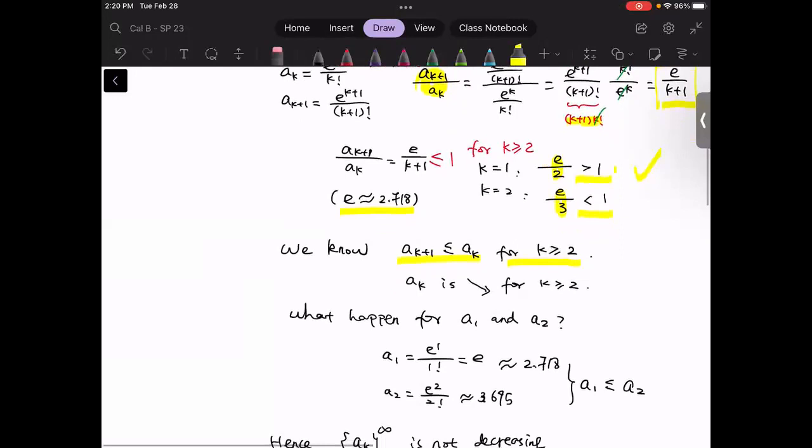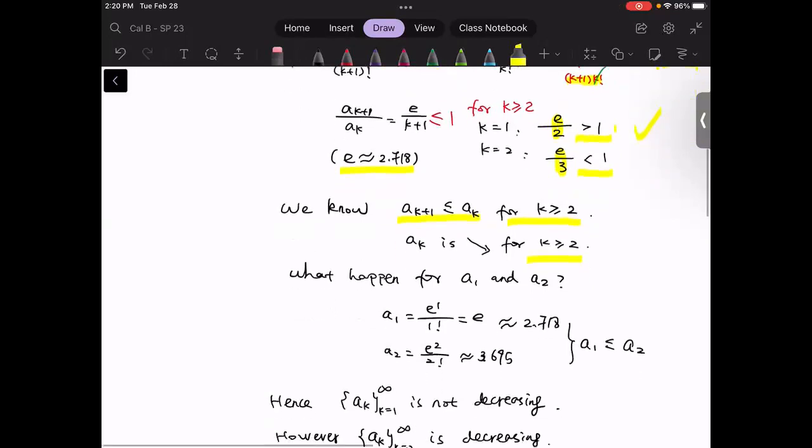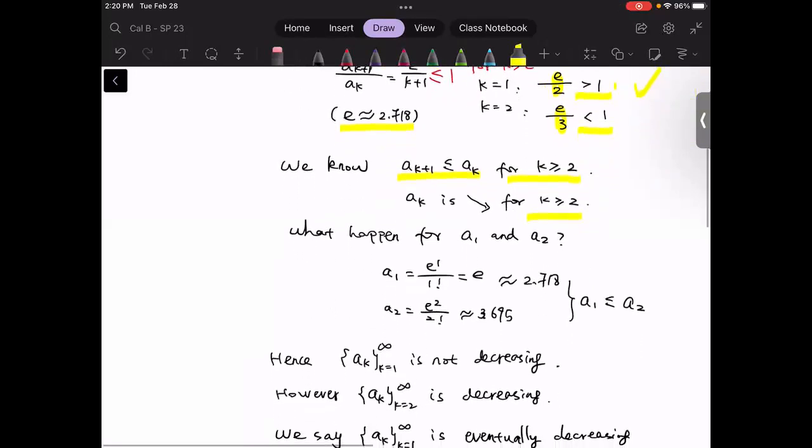Now, this tells us that the sequence is actually decreasing, but this decreasing is only true for k greater or equal to two. Now, we would like to investigate what will happen between the two numbers, a_1 and a_2. Again, just plug in, compute a_1 and a_2 value,